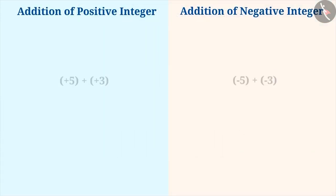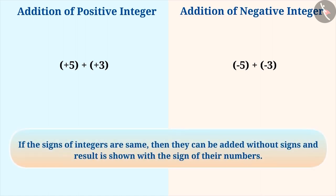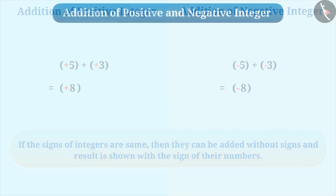With the help of these two examples, you must have understood that if the signs of integers are the same, then they can be added without signs and the result is shown with the sign of their numbers. Now, if we have to add a positive and a negative integer, how shall we do this?